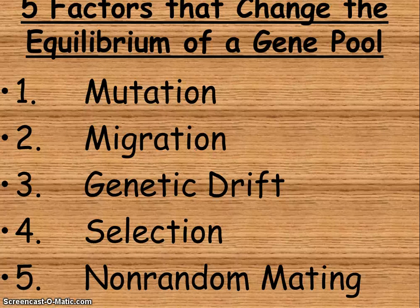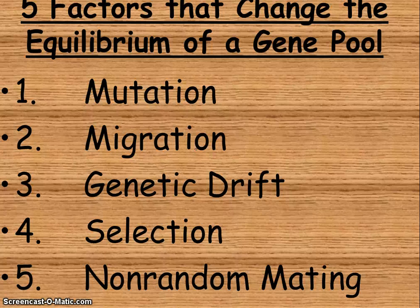Genetic drift is a random change in allele frequency due to chance, and it happens in smaller populations. In small populations, the frequency of a gene may be changed drastically by chance alone, resulting in a population with distinct genetic characteristics. There are two causes: the founder effect and the population bottleneck — there's a slide that will help explain genetic drift.